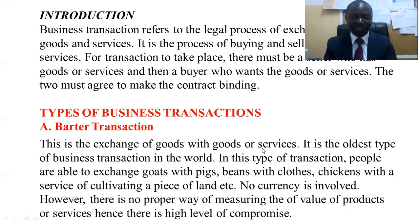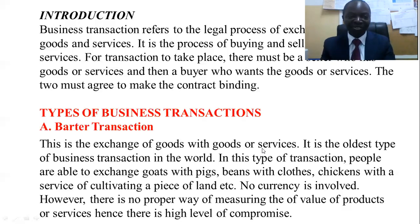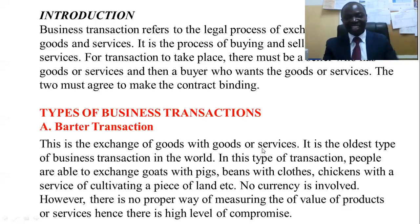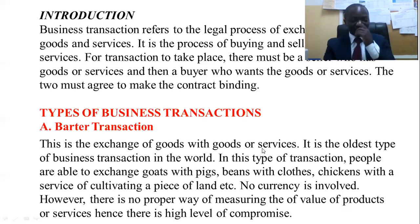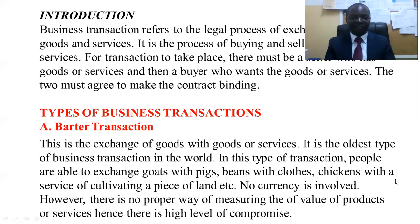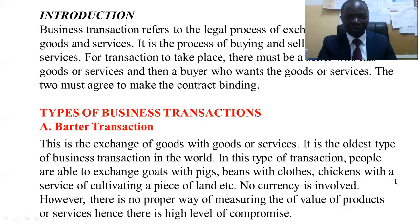Indivisibility is another disadvantage of barter transaction. You cannot divide some goods unless you slaughter or kill them. For example, when exchanging a chicken with a duck, you cannot say the duck is too big and ask to cut off just the leg — you exchange as they are. With currency, however, you can easily say something is worth 9 kwacha and make change from 10 kwacha to pay the exact amount equal to the product or service. So indivisibility is a significant challenge with barter transactions.